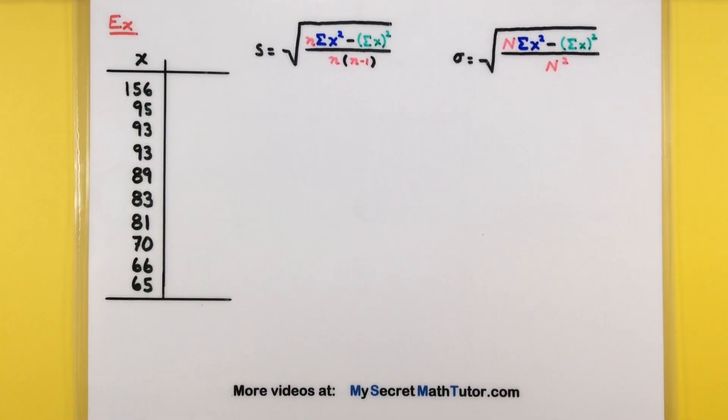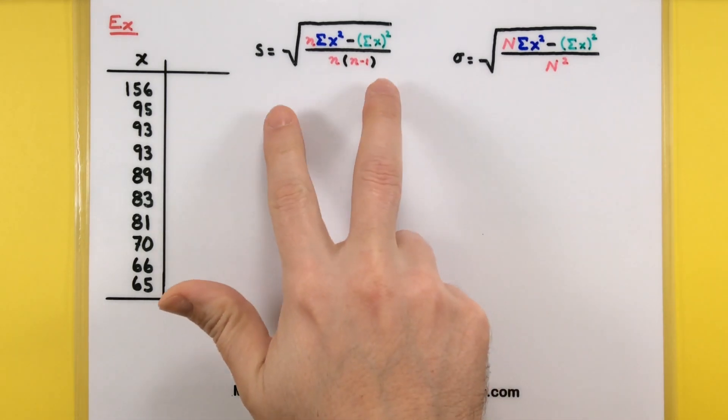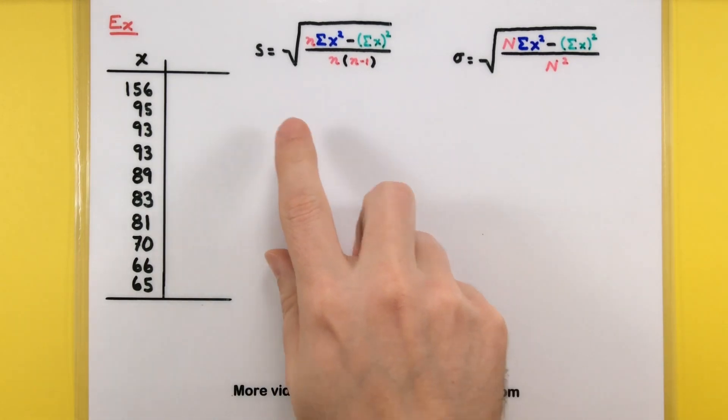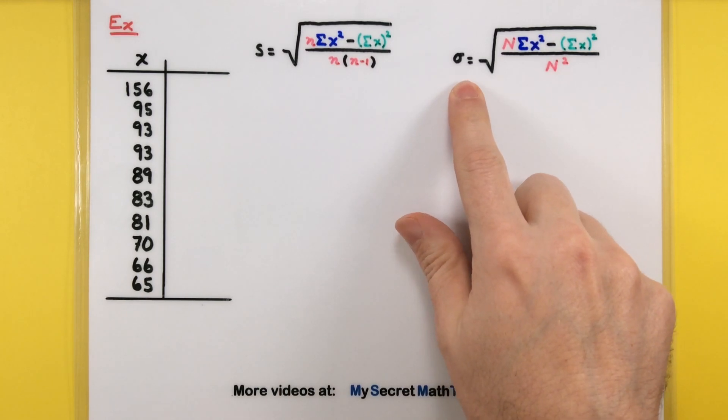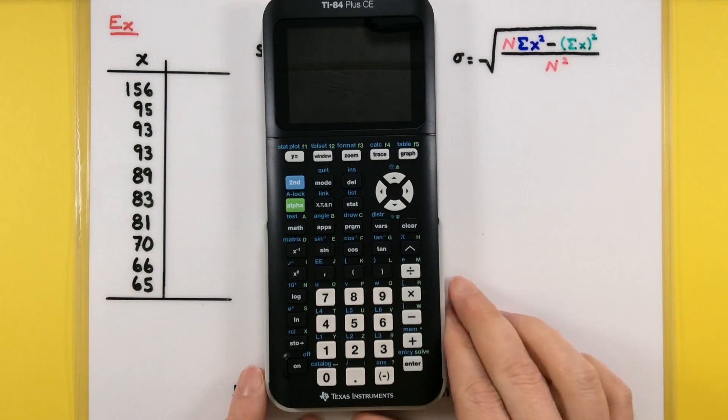All right, so first we need some data and of course this data could represent a sample of some sort or could represent a population. Depending on whether it represents a sample or a population there are two different formulas that you could use for finding that standard deviation. Now of course the calculator is going to take care of the heavy lifting but you'll see this notation when we get to those menus. Either an S if it represents a sample or a sigma if it represents a population. All right, so let's go ahead and start getting this data into the calculator.